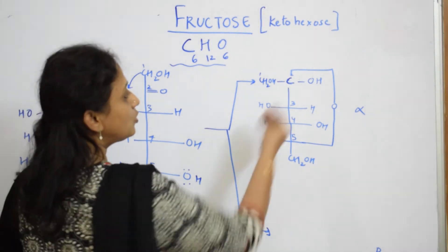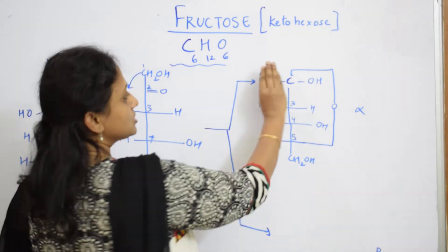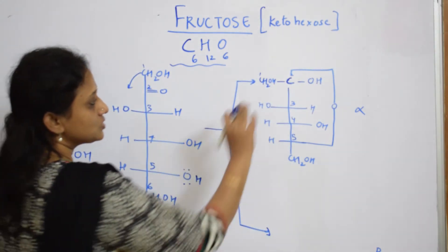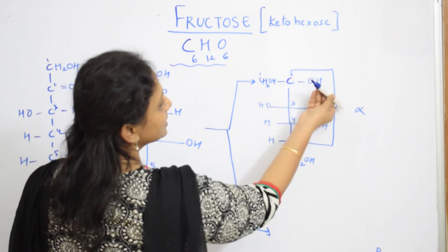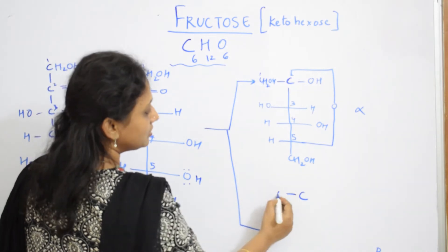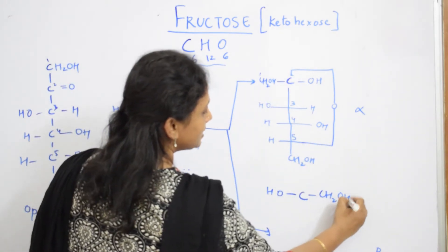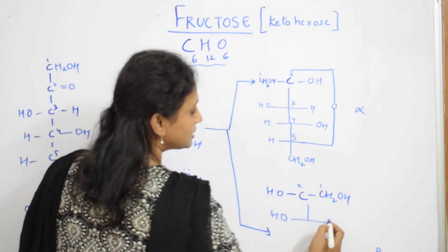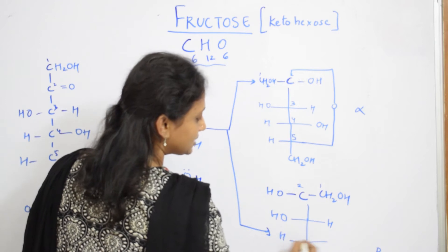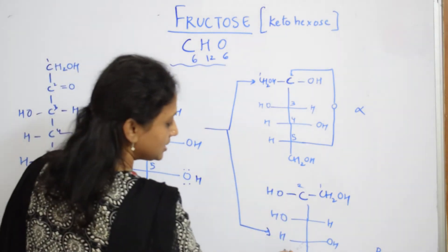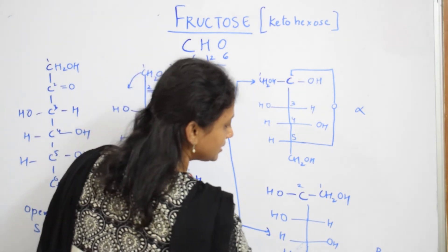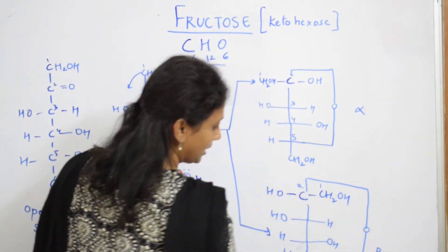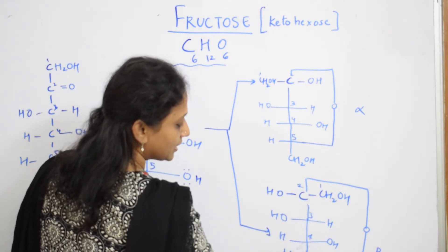For the beta structure, hold the ring and rotate the first carbon. CH2OH was on one side — when you rotate it in this direction, CH2OH comes to the other side and OH comes to the opposite side. Remaining structure is the same. Numbering: one, two, three — third carbon has OH and H, fourth carbon has H and OH, fifth carbon has H and ring oxygen, sixth carbon has OH. That is your beta structure.